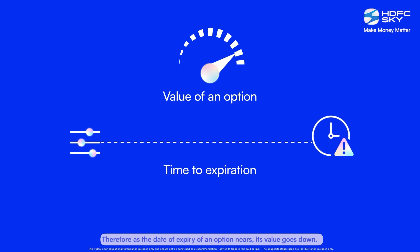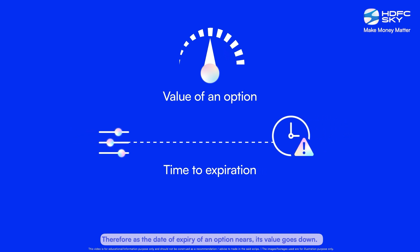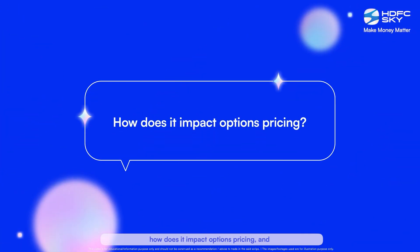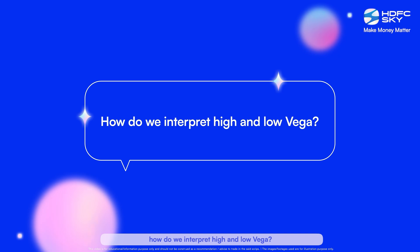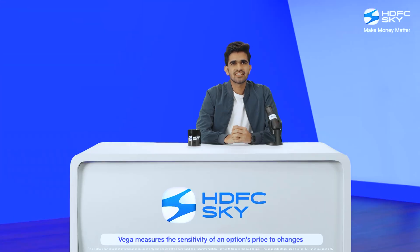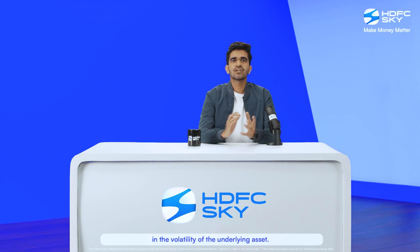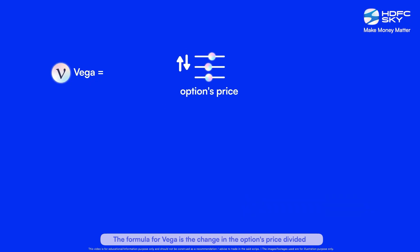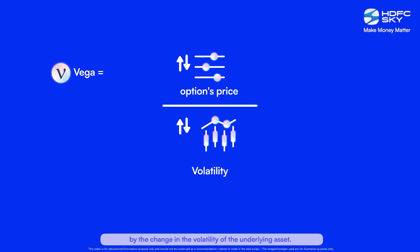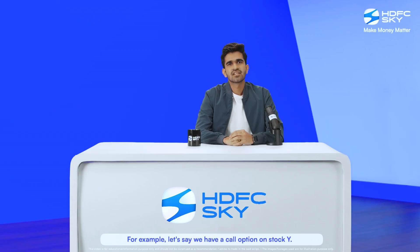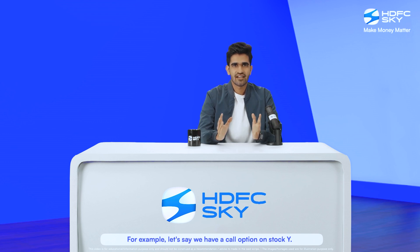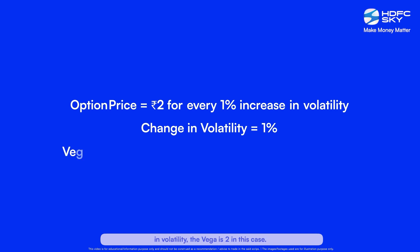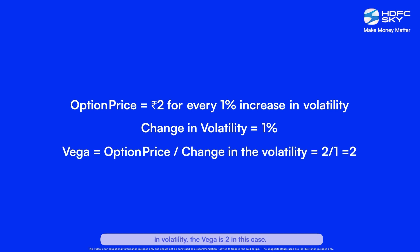As the date of expiry of an option nears, its value goes down. And finally, Vega. Vega measures the sensitivity of an options price to changes in the volatility of the underlying asset. The formula for Vega is the change in the options price divided by the change in the volatility of the underlying asset. For example, if the options price on stock Y increases by ₹2 for every 1% increase in volatility, the Vega is 2.